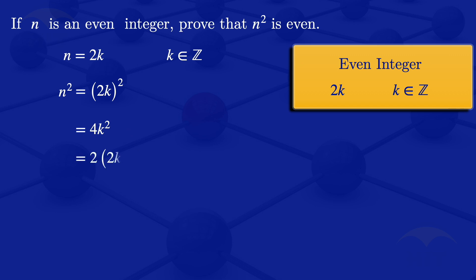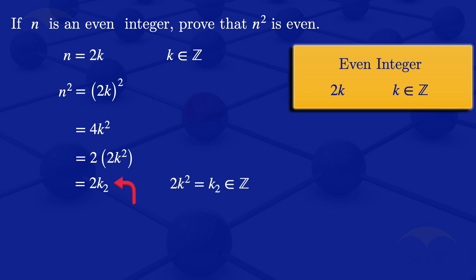On this 4k squared, I can factor out a 2, so that we have it as 2 times 2k squared. Now k is an integer, and when we square an integer we get another integer, so k squared is an integer. When we multiply k squared by 2, we are multiplying two integers, so we get another integer. We can write that part, 2k squared, as another integer which we shall call k2. So our expression becomes 2k2, where k2 is an integer.